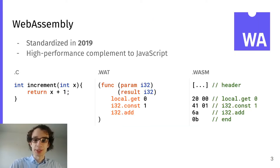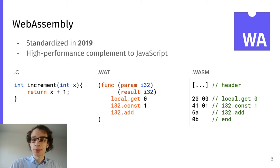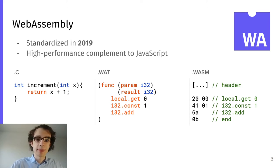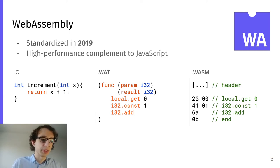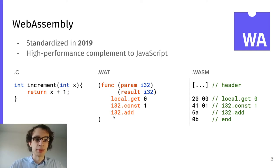WebAssembly was standardized in 2019. It's a low-level bytecode that was originally intended as a high-performance complement to JavaScript, but by now is also available on the server side via Node.js or in standalone VMs. It's already available on more than 90% of browsers. On the bottom here you can see a small example: on the left side some C code, in the center the WebAssembly text representation, and on the right side the binary WebAssembly format. As you can see from the text representation, it's very similar to other assembly languages and very simple.